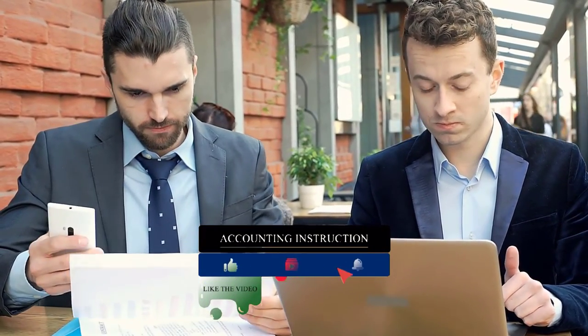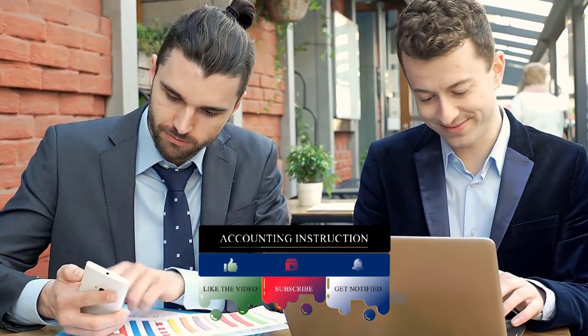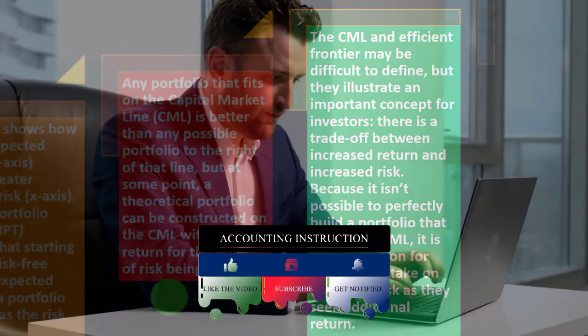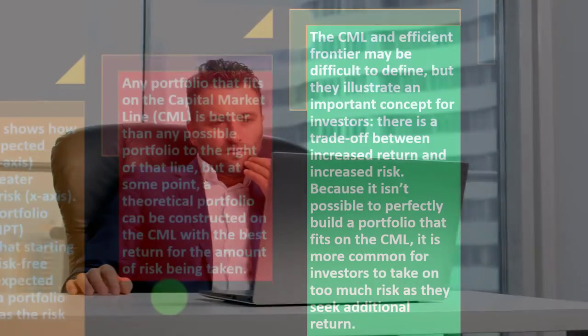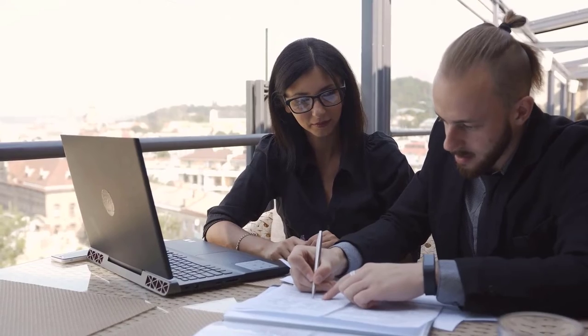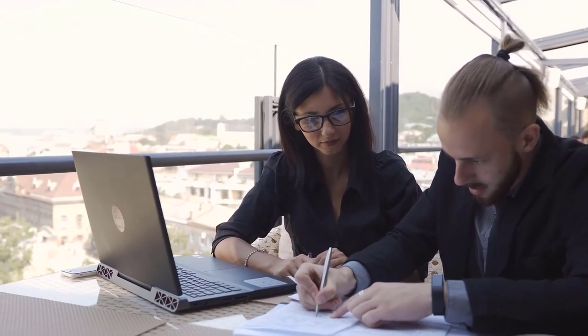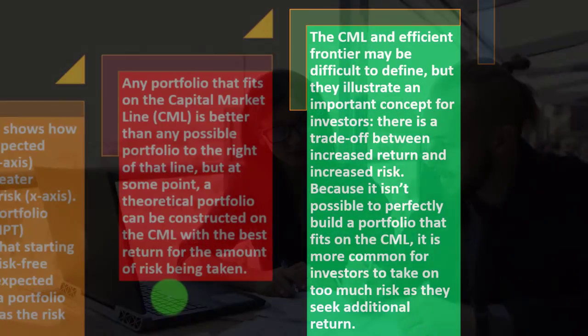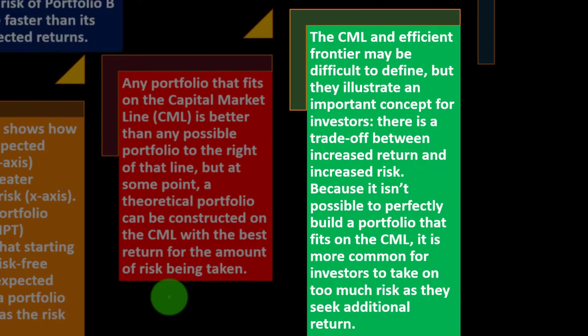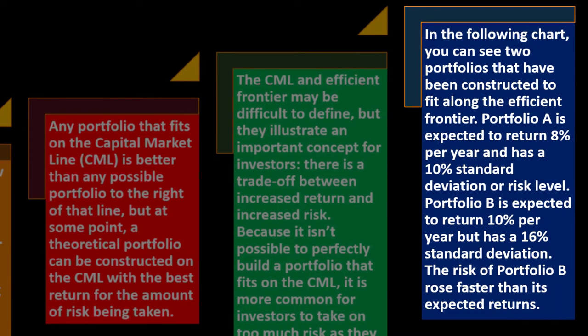Because it isn't possible to perfectly build a portfolio on the CML, it is more common for investors to take on too much risk as they seek additional returns. Diversification is key: during good times, a diversified portfolio may feel like it's missing out on climbing stocks, tempting investors to shift money toward riskier returns. But then you're taking on more risk than the returns warrant, and in a downturn you get hit harder than you otherwise would. In the following chart, portfolio A is expected to return 8% per year with a 10% standard deviation, while portfolio B is expected to return 10% per year with a 16% standard deviation.